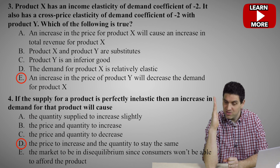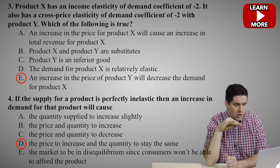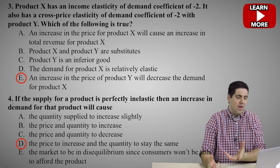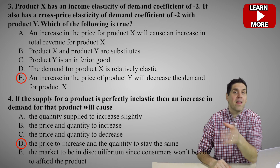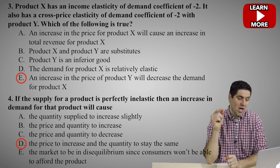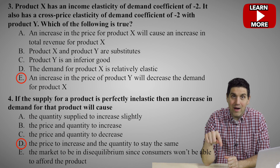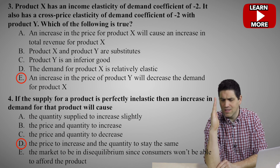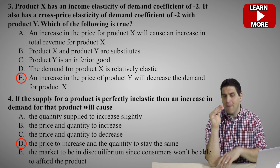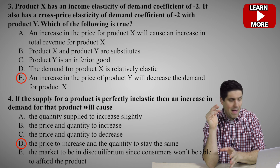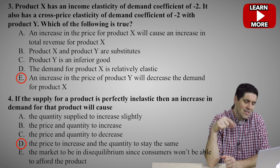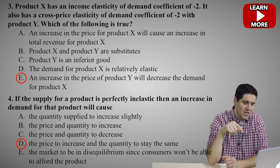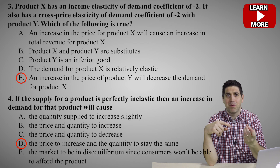Perfectly inelastic means it's a vertical straight-line supply curve. So B, C, and E are wrong — E says the market will be at disequilibrium, but it'll actually stay at equilibrium. Also, keep in mind we're talking about the supply of the product, not the demand. Demand can also be perfectly inelastic — like the demand for insulin — where it doesn't matter the price, people still buy the same amount. If you chose E, you were thinking more about demand than supply.